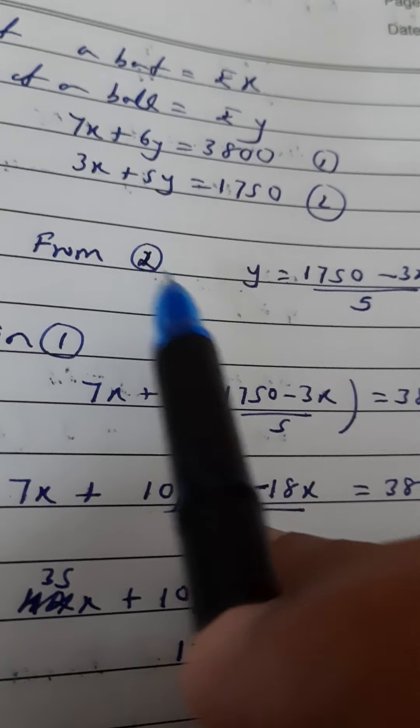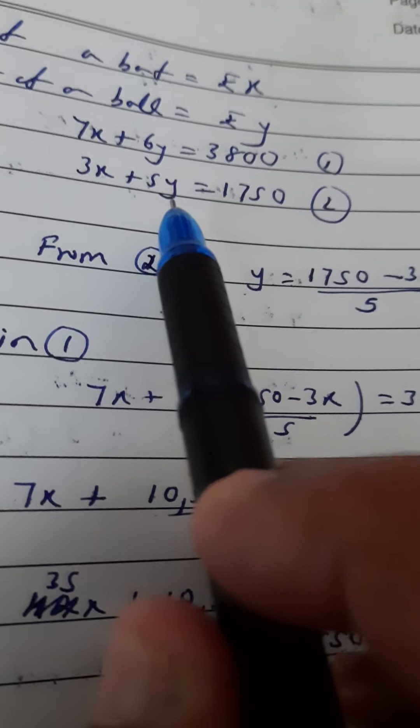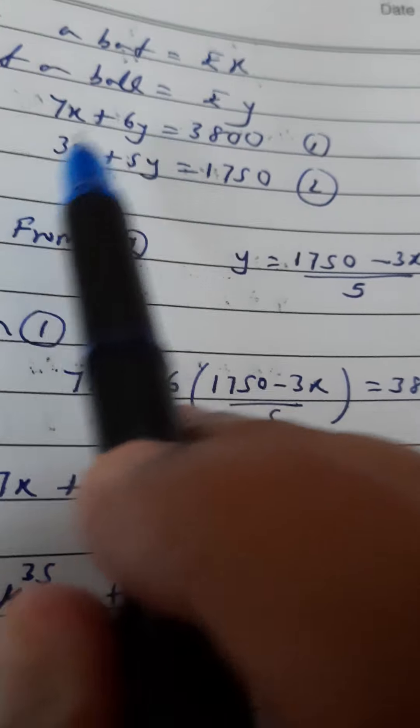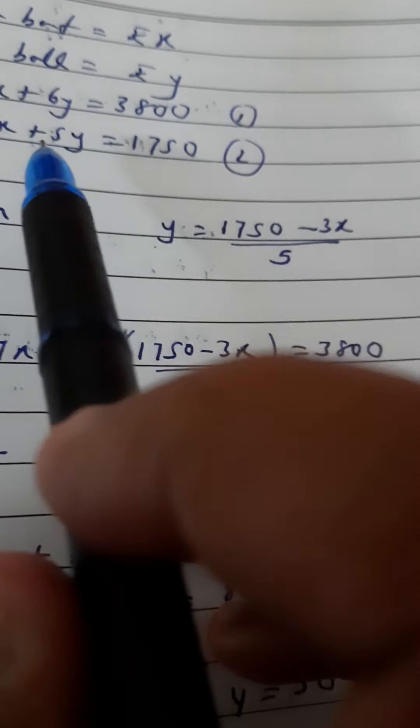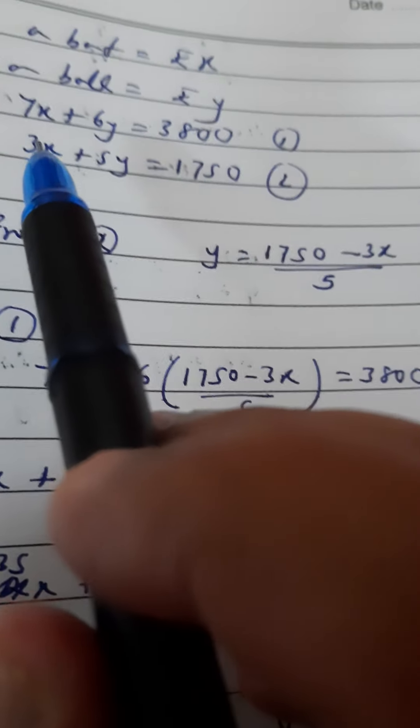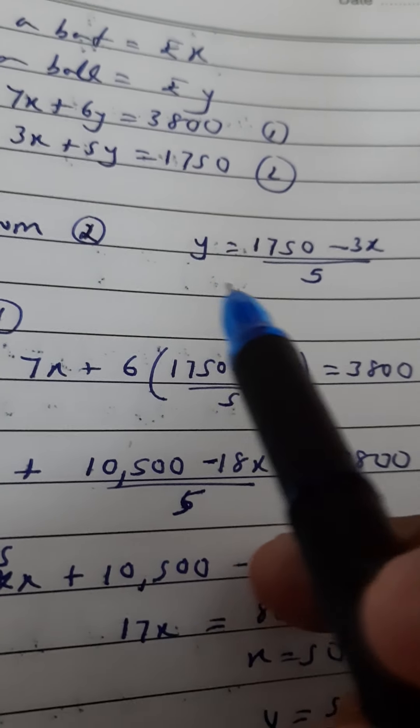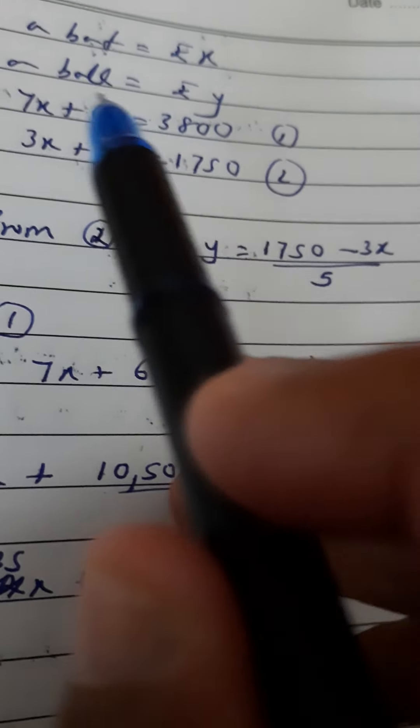Using the substitution method, we are taking out the value of y from here. So 5y equals 1750 minus 3x. The 3x comes to this side, giving us negative 3x. So y equals 1750 minus 3x divided by 5. This value of y we have taken from equation 2. I will substitute in equation 1.